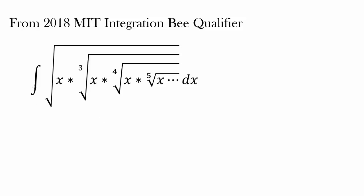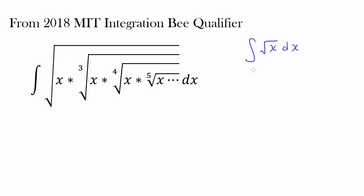This seems hard to evaluate. So why don't we start by taking a look at a more finite case, a more simplified case — where we just have the integral of square root of x dx. That's extremely easy to evaluate. That's the integral of x to the one-half dx, which is x to the three-halves over three-halves plus c.